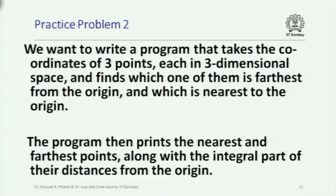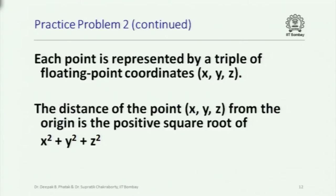This next program takes the coordinates of three points, each in three-dimensional space — x1, y1, z1, x2, y2, z2, x3, y3, z3 — and finds which one of them is farthest from the origin and which is nearest to the origin. The program prints the coordinates of the nearest and farthest points along with the integral part of their distances from the origin. Each point is represented by a triple of floating point coordinates x, y, z, and the distance from the origin is the positive square root of x² + y² + z².